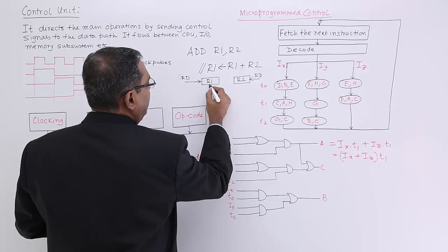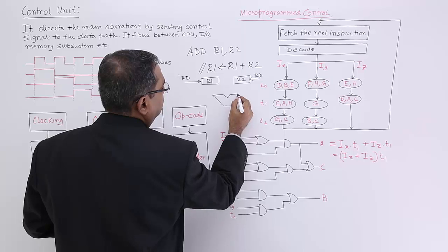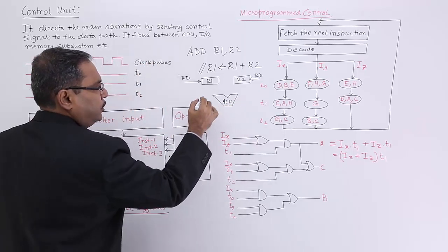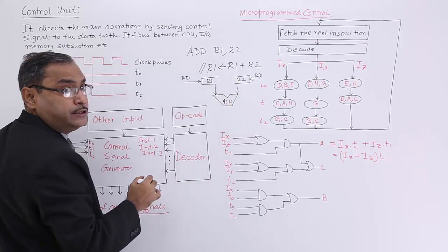From these registers content, let us suppose this is my ALU, where the addition operation will take place. Data will be coming from register 1 and register 2.